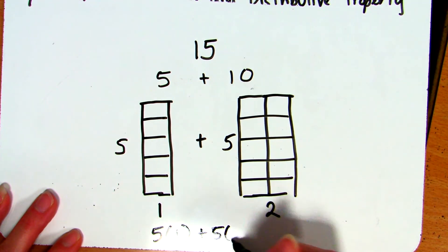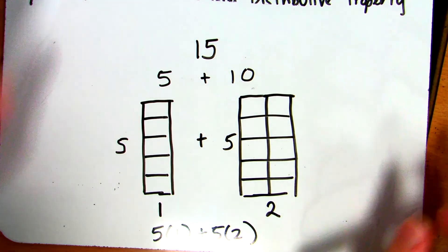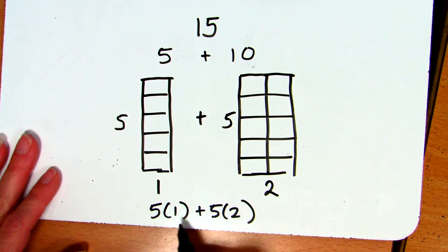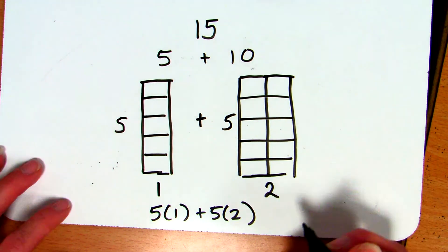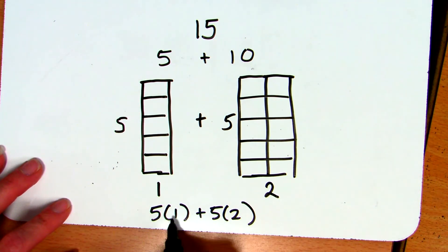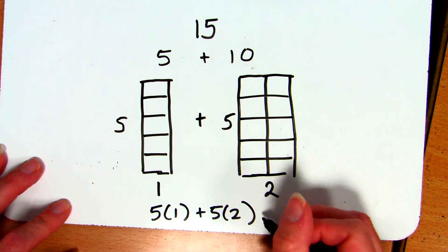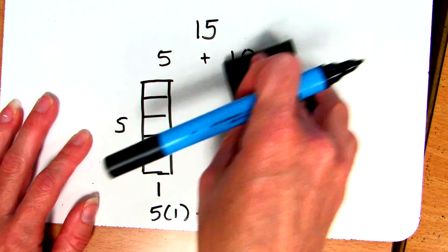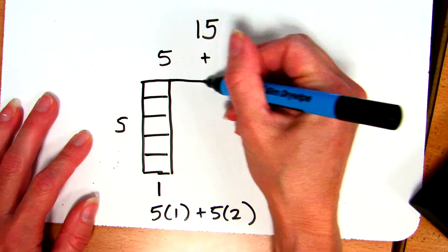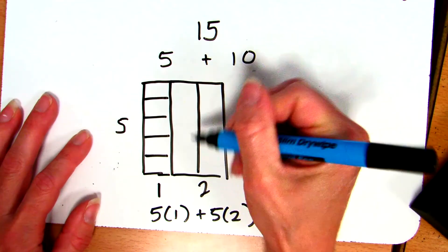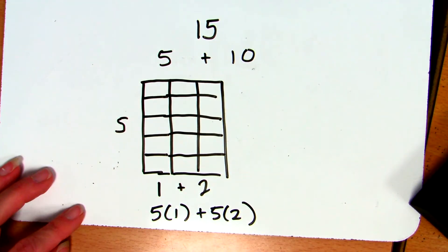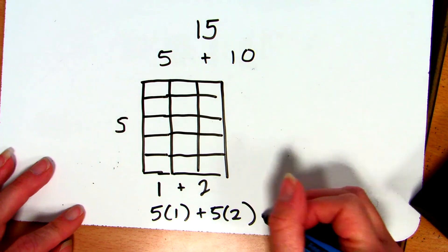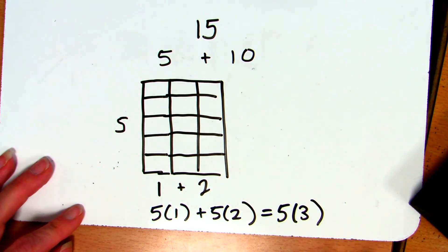So 5 times 1 plus 5 times 2 is an equivalent expression to 5 plus 10. So 15, 5 plus 10, and 5 times 1 plus 5 times 2 are all equivalent expressions — different ways to write the number 15. We are creating equivalent expressions using the distributive property. If I put these all together, I would now have a grid that is 5 by 3, so 5 times 1 plus 5 times 2 is the exact same thing as 5 times 3.